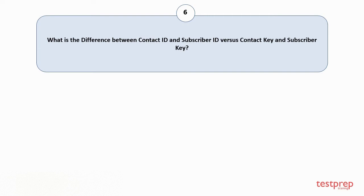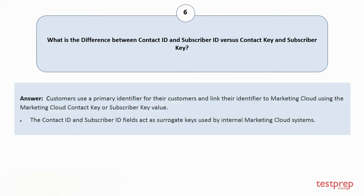Customers use a primary identifier for their customers and link their identifier to Marketing Cloud using the Marketing Cloud Contact Key or Subscriber Key value. The Contact ID and Subscriber ID fields act as surrogate keys used by internal Marketing Cloud systems.